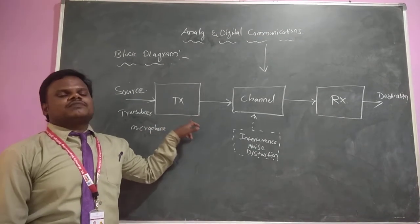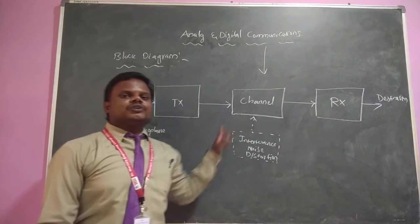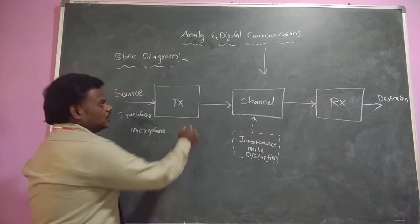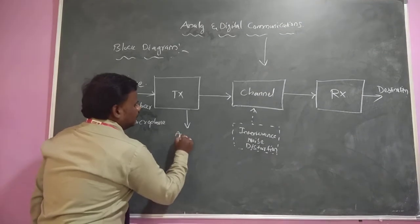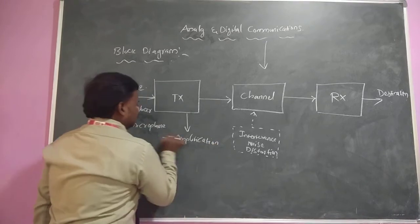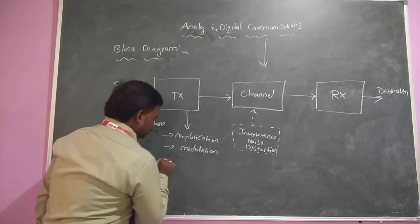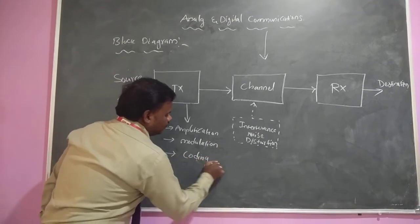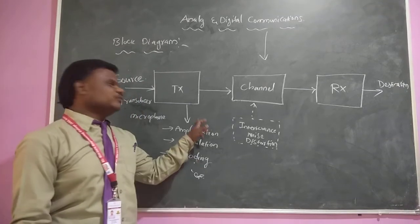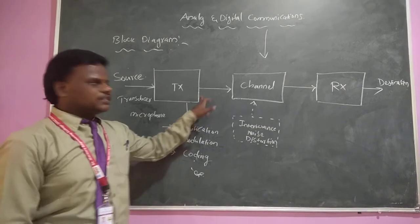The transmitter will perform whatever things are required to transmit this message signal to the destination without any distortions and without any loss of the signal. For that, it performs some functionalities like amplification, modulation, and in some cases, coding. These are some basic functionalities performed by the transmitter. After performing these things, the transmitter emits the signal into the channel.